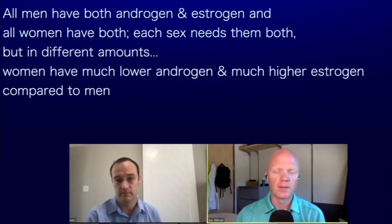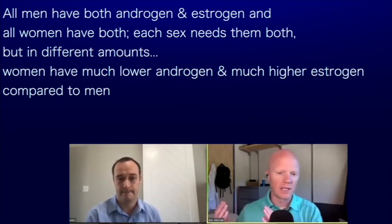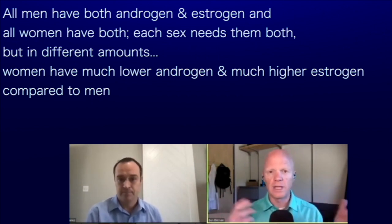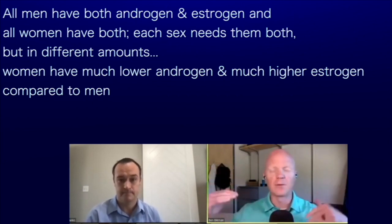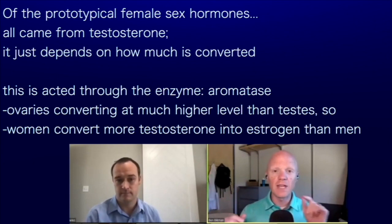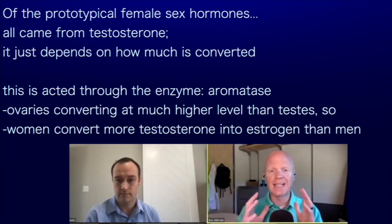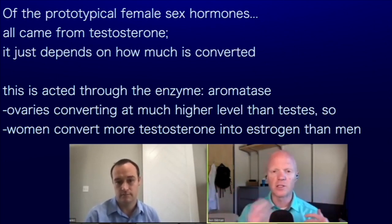Testosterone and androgens are called the prototypical male sex hormones, but that's an oversimplification. All men have both androgens and estrogens; all women have both androgens and estrogens — each sex needs them, just in different levels. Women have much lower androgens and much higher estrogen relative to men. All the prototypical female sex hormones actually came from testosterone — it's just a matter of how much is getting converted through the enzyme aromatase. Ovaries do this at a much higher level than the testes.